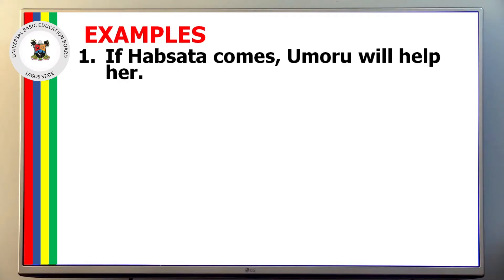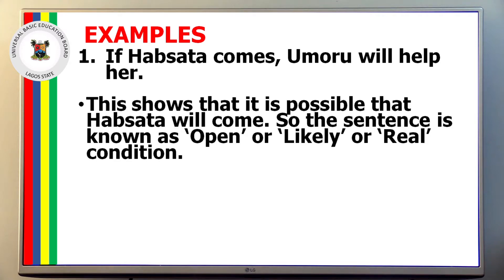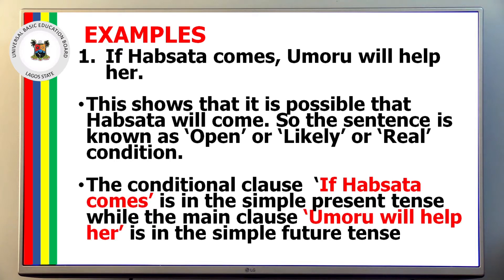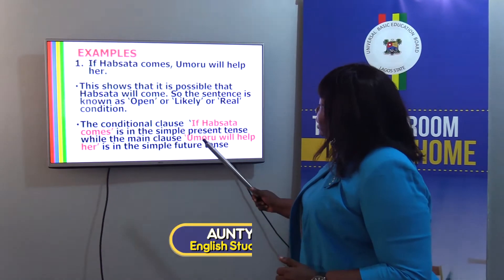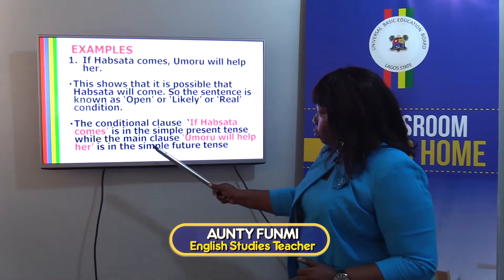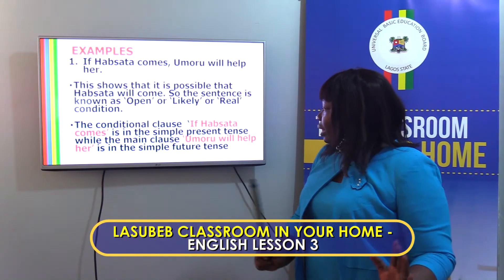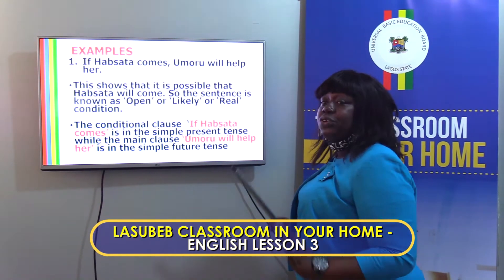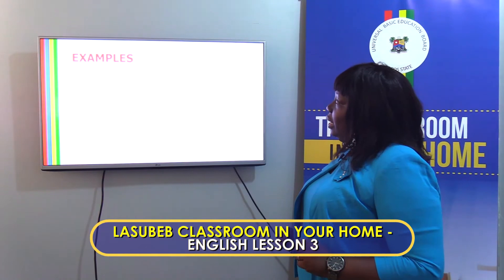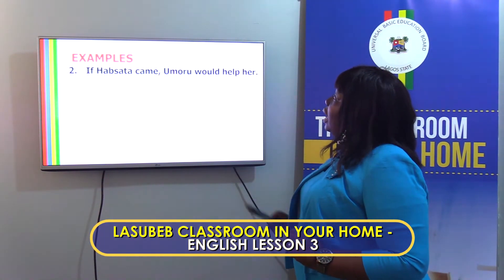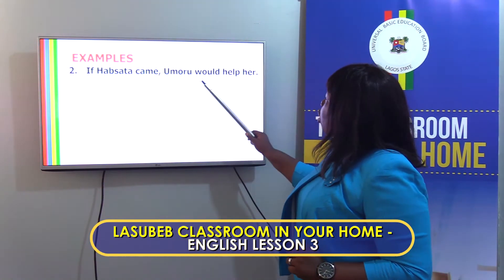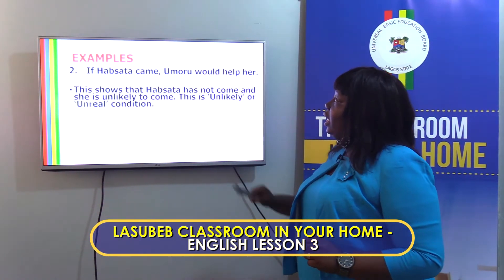For example: 'If Absata comes, Umori will help her.' This shows that it is possible that Absata will come, so the sentence is known as the open, likely, or real condition. The conditional clause 'if Absata comes' is in the simple present tense, while the main clause 'Umori will help her' is in the simple future tense.